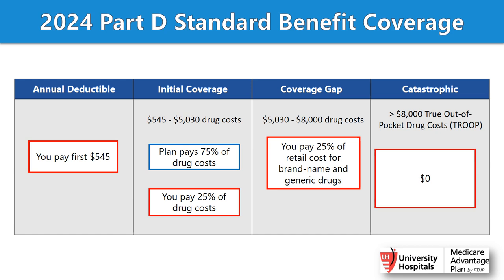The 2024 Part D standard benefit works as follows: there's an annual deductible of $545. After paying that, you enter the initial coverage stage and pay your co-pay until you reach a total out-of-pocket medication cost of $5,030. Once you reach that, you enter the coverage gap or donut hole stage, where you pay 25% of the cost of your medications. You continue paying 25% until you reach a true out-of-pocket of $8,000, at which point you enter the catastrophic stage and your co-pays change to $0.